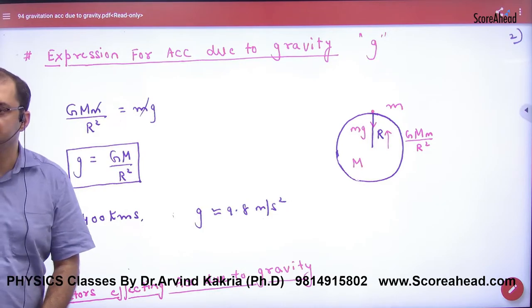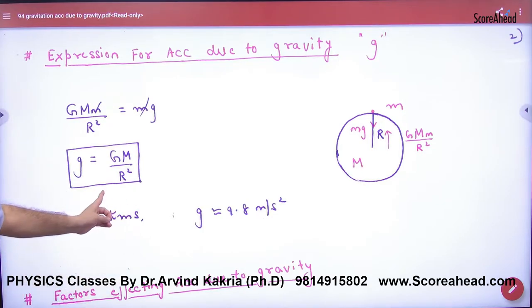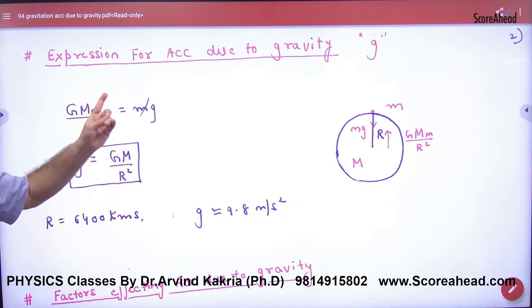So, small g formula: capital G, capital M by R square. What is the mass? Earth. That is the apple or point mass.